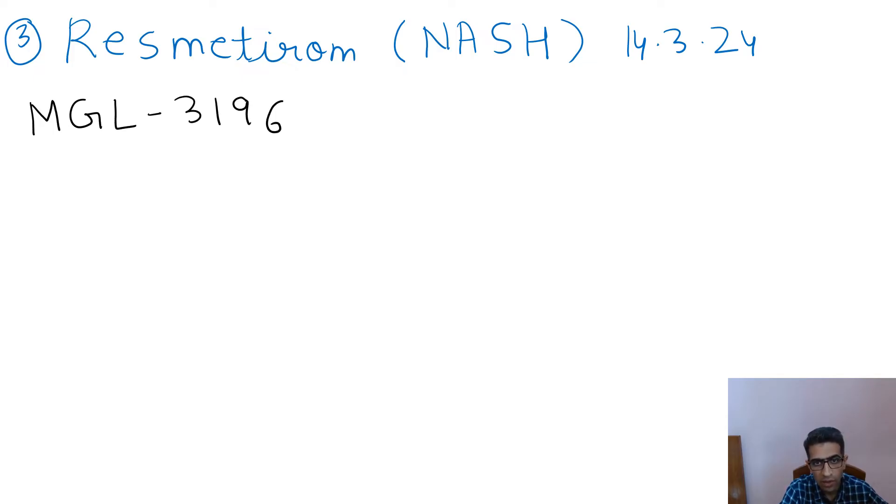Drug number three is resmetirom, used in NASH - non-alcoholic steatohepatitis. It's also known as MGL-3196, a first-in-class oral thyroid hormone receptor beta agonist.